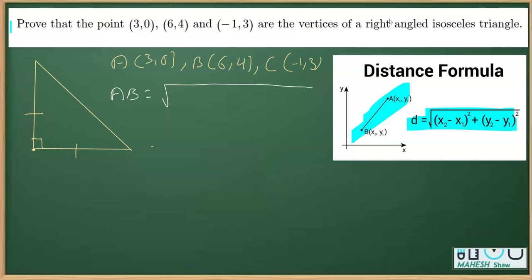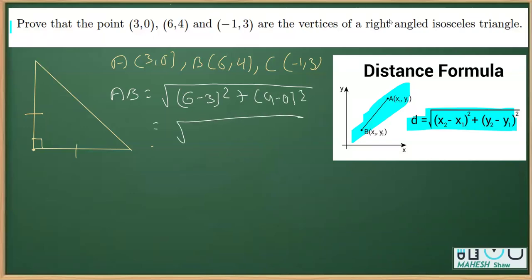AB is equal to the square root of (x₂ - x₁)² + (y₂ - y₁)², so this is (6 - 3)² + (4 - 0)². That gives us (3)² + (4)², which is 9 + 16. Therefore we get AB as the square root of 25, which is 5. So this is 5 units.